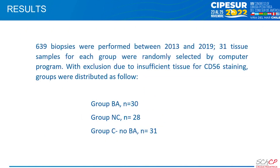Concerning the results, 639 biopsies were performed between 2013 and 2019. A computer program randomly selected 31 tissue samples for each group. With exclusions due to insufficient tissue for CD56 staining, groups were distributed as follows: Group BA equals 30 patients, Group NC equals 20 patients, and Group C no BA equals 31.